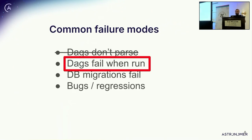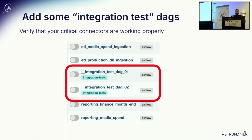The next failure mode is DAGs that fail when you run them after you upgrade. One thing that I think is useful is to add to your project what I call integration test DAGs. The idea is you want to write DAGs that are going to smoke out issues with the connectors and services that are critical to your real production pipelines. I've done this in the past — create a couple of integration test DAGs, tag them, and you can run them many times without necessarily causing problems or spending a lot of money.